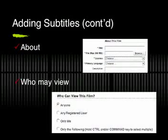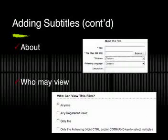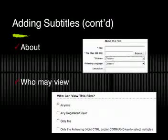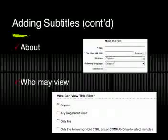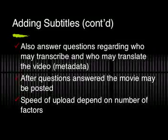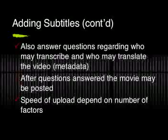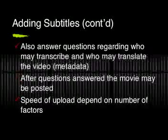Information needs to be added about the video, including the title, the license of choice, a primary language, and a brief description. The option of who may view the video is also included. A range of options is found here, including public, registered users, or private. Additional questions need to be answered regarding who may transcribe and translate, plus several more.